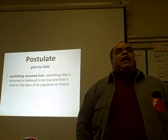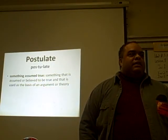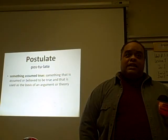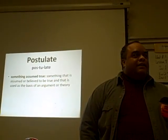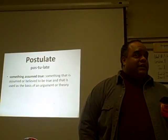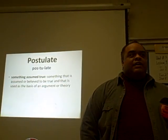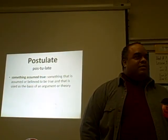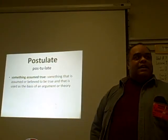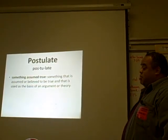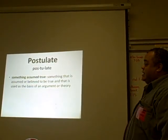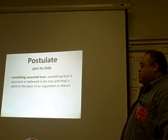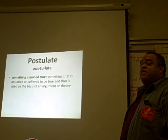Now, when you have what you call a theory — let's say you see me, and you say it's a big guy so you're pretty sure he eats a lot of food. That's a theory. Then you test that theory. You find a person that eats a whole lot of food and you see that it's a big guy. Then that theory becomes what you call a postulate. That's what they use in geometry to prove things. A postulate is something assumed to be true — something believed to be true that is used as a basis of an argument or a theory.